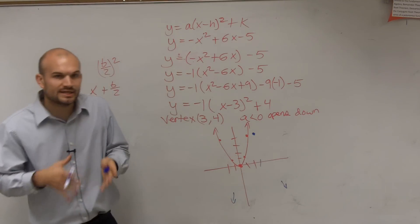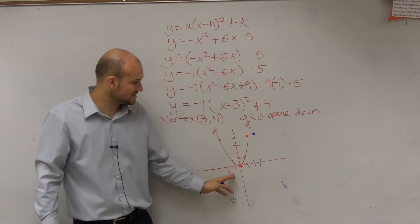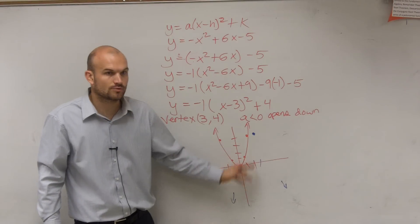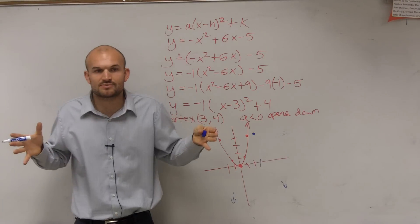So now what we need to do is find our next two points. Well, guys, look at the relationship. The relationship between the points is over 1, up 1. Over 2, up 4. Is there any change? Is there any vertical stretch or compression on this problem?